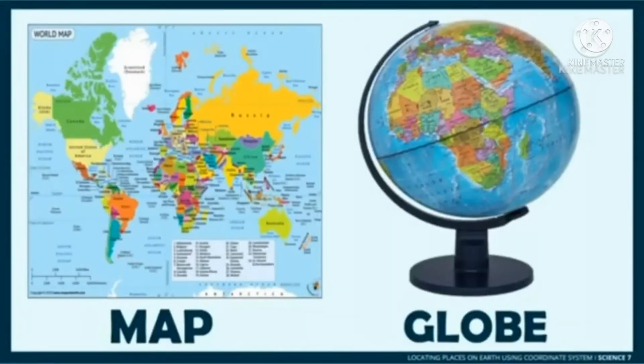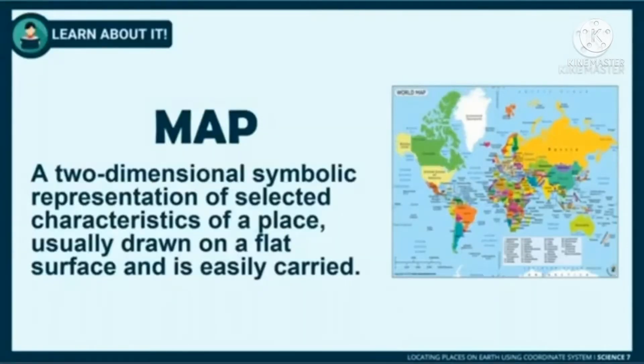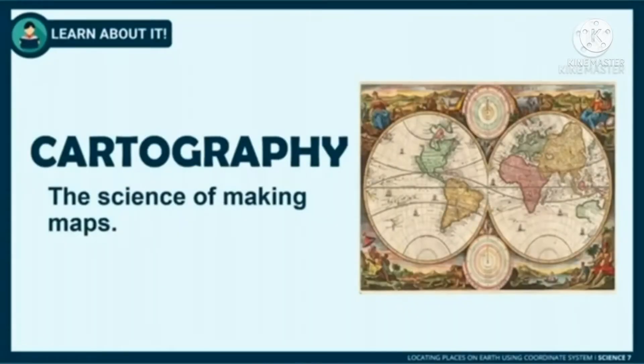Before the utilization of coordinates have been introduced, people during old times used maps and globes to locate places on Earth. A map is a two-dimensional drawing that gives a symbolic representation of selected characteristics of a place, usually drawn on a flat surface and is easily carried. The art or science of making maps is called cartography, and those experts making maps are known as cartographers.